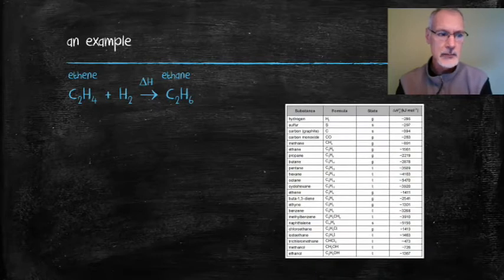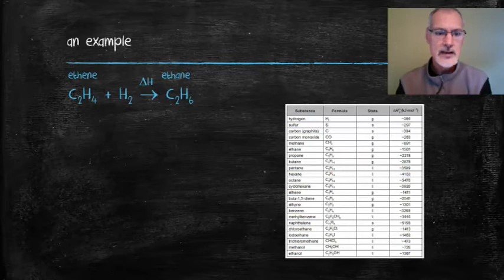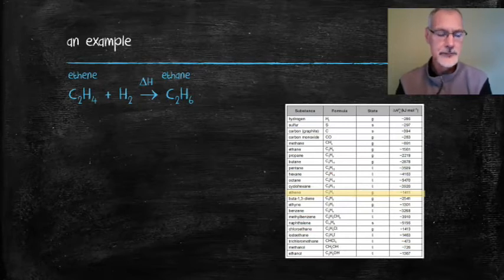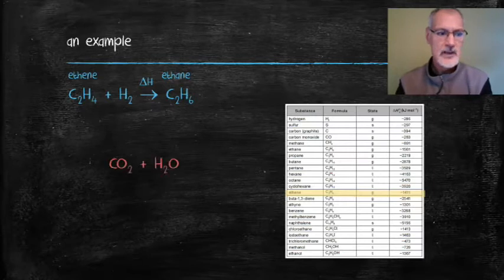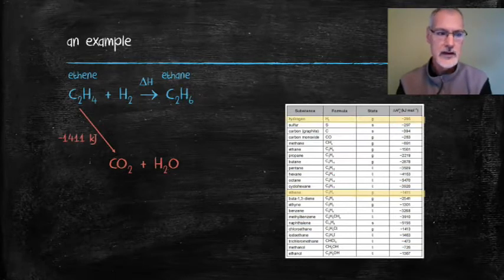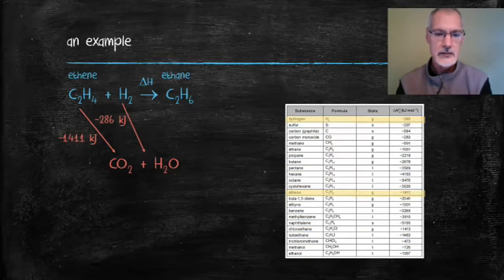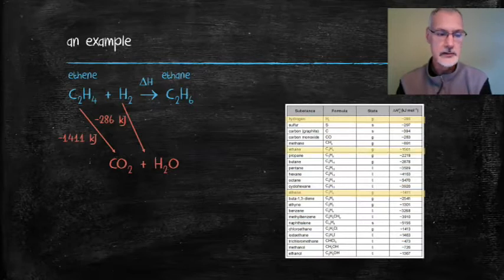If I burn the chemical ethene, I'll arrive at carbon dioxide and water. The heat associated with that particular reaction is negative 1411 kilojoules. I'll put that on my diagram. Similarly, I'll look at burning hydrogen, which is negative 286 kilojoules. And lastly, the combustion of ethane indicates somewhere around negative 1561 kilojoules.